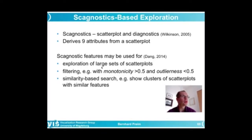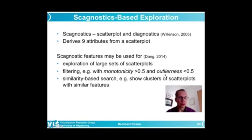Why should we search within a large amount of scatterplots? If we have high-dimensional data — 100 dimensions — then we have 10,000 pairwise correlations, leading to 10,000 scatterplots. We probably do not have time to look at all of them. But we could be interested in scatterplots where we have a particularly low or particularly high number of outliers — that would be one of these nine measures, outlier-ness. So we can perform a similarity-based search. Starting with one scatterplot, we could look for other scatterplots that have similar characteristics, similar features in terms of the diagnostics of scatterplots.